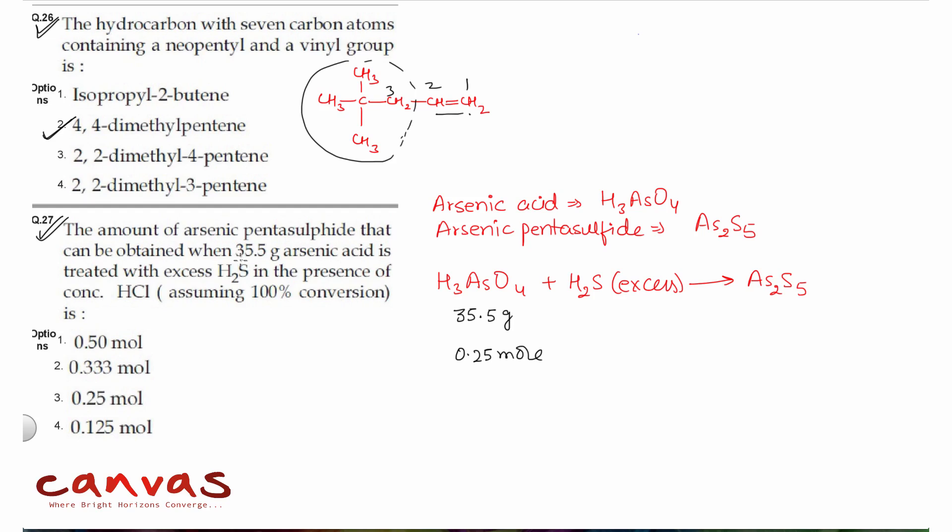The arsenic acid is H3AsO4, arsenic pentasulfide is As2S5. H2S is in excess, so this arsenic acid is our limiting reagent.